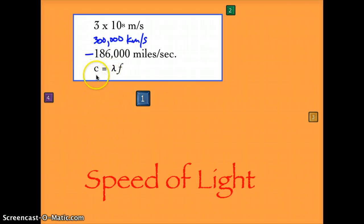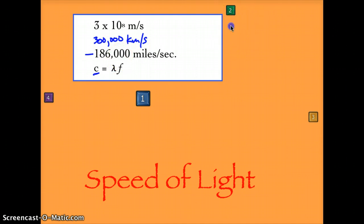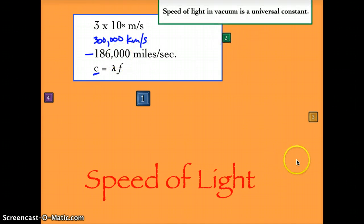We use the same formula that we used in waves because this is a wave formula, but we use a C for the speed of light because this is a constant. The speed of light in a vacuum is a universal constant. It's also the speed limit for the universe. Nothing travels faster than the speed of light.